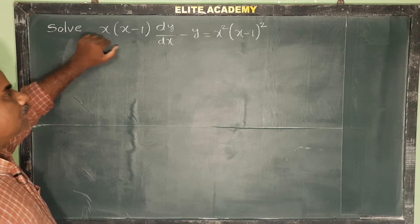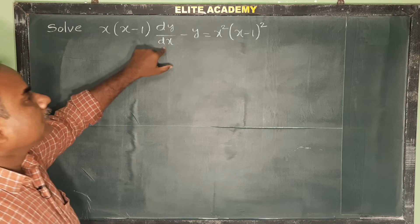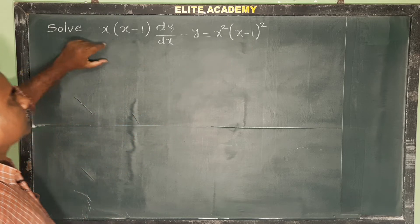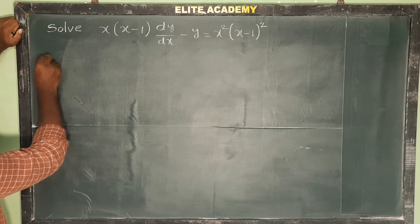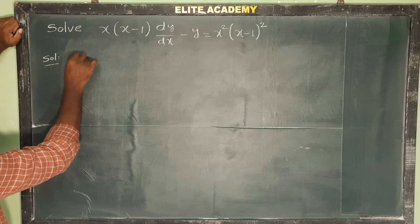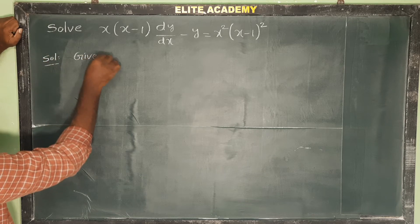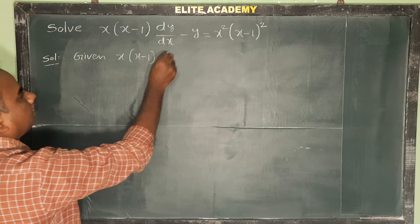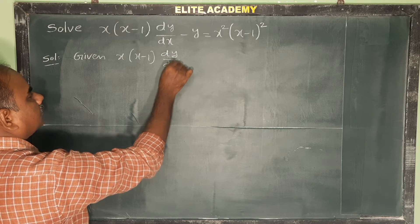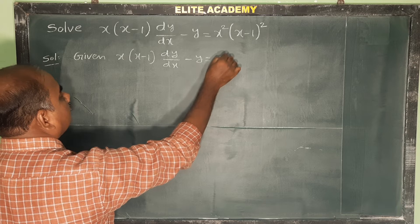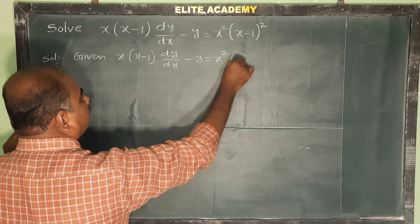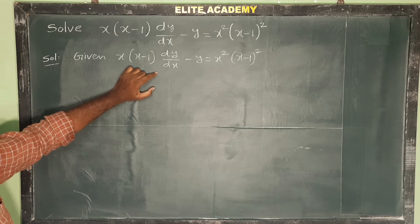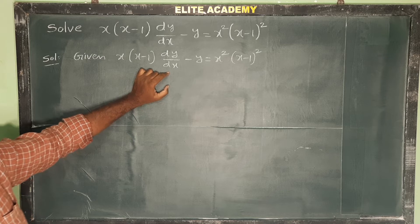Solve x(x-1) dy/dx minus y equals x²(x-1)². This is the given differential equation. It is a linear differential equation but it is not in general form.